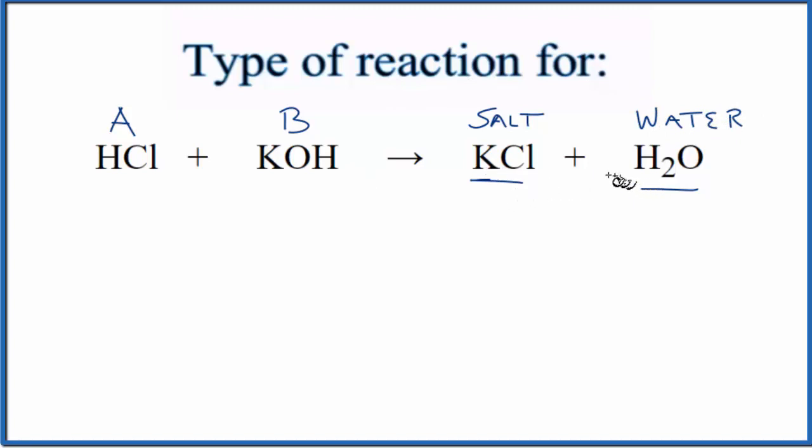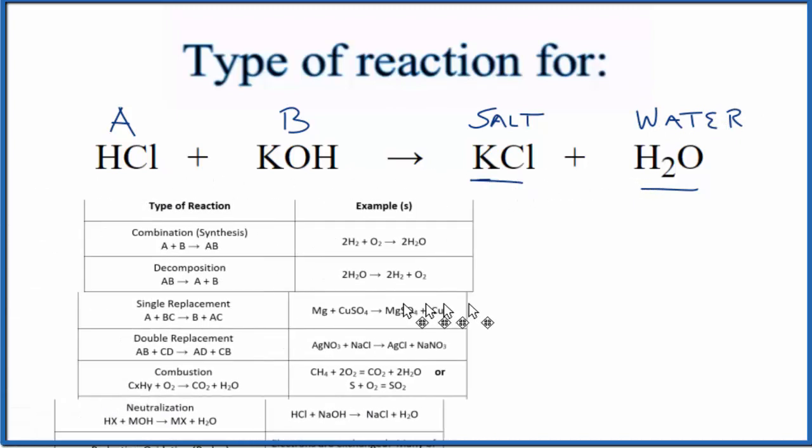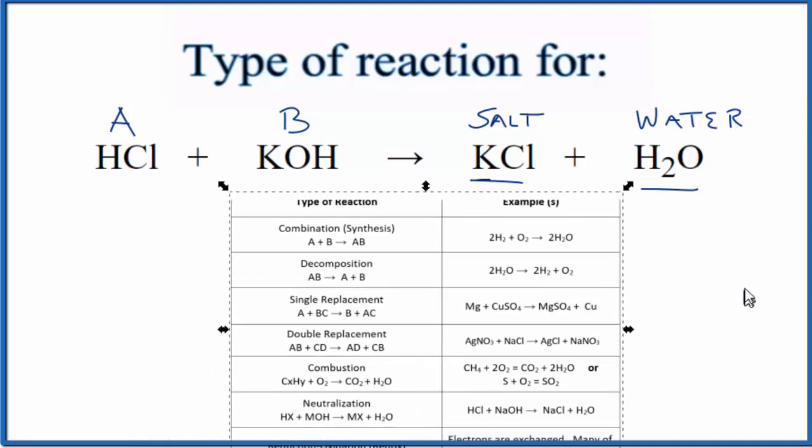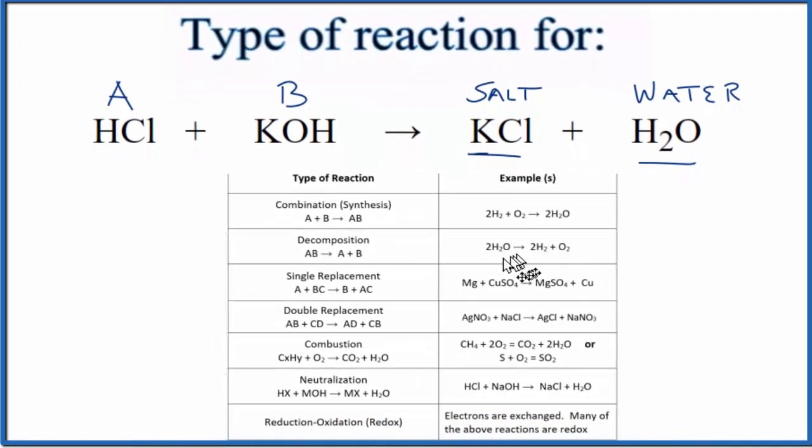Let's look at a table of common types of reactions. So here's our table, and as we look down, we can see we have our HX, so the H is the hydrogen, this is the X,